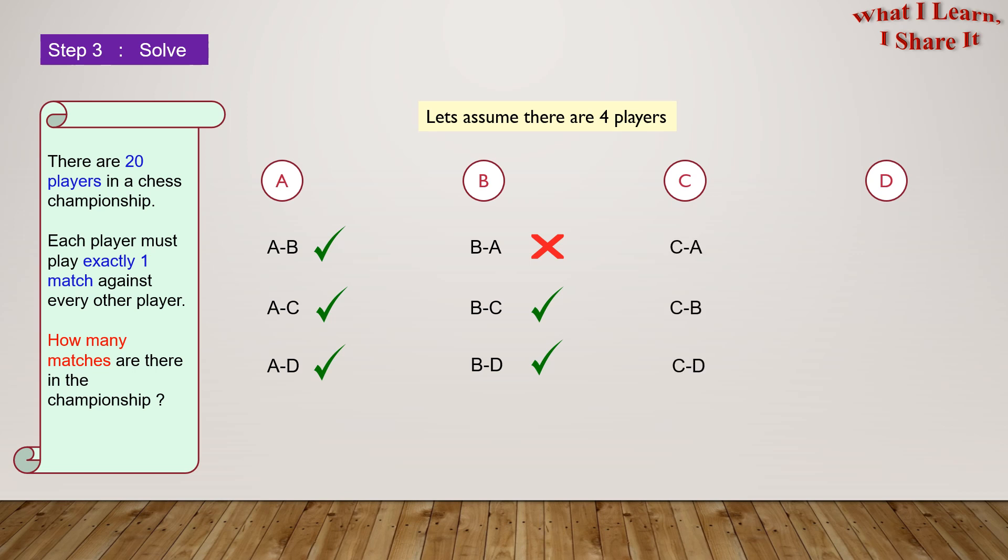So here are the possible combinations for player C: C-A, C-B, and C-D. Player C has already played with player A and player B, so we can't consider those. But we could definitely consider the C-D combination.